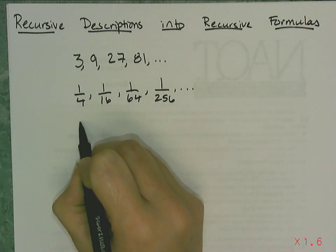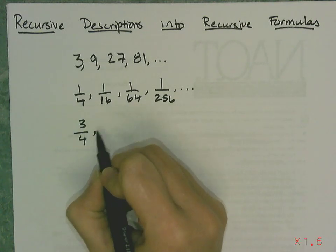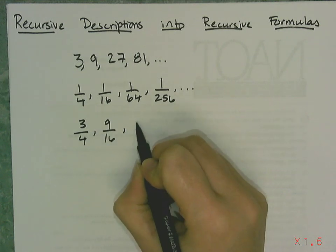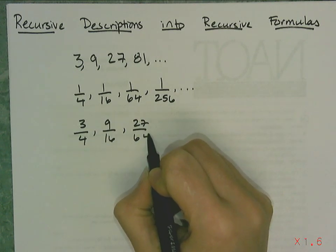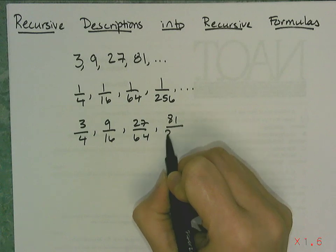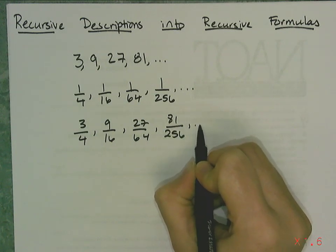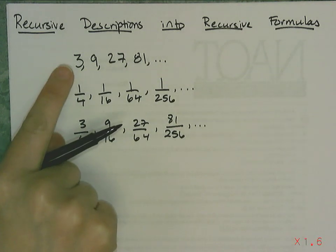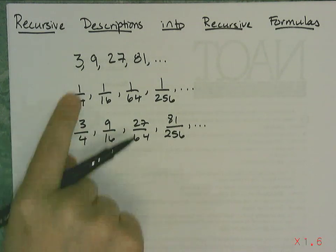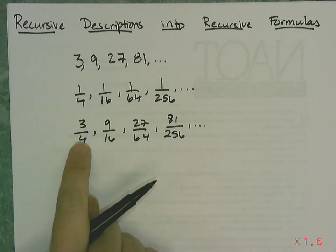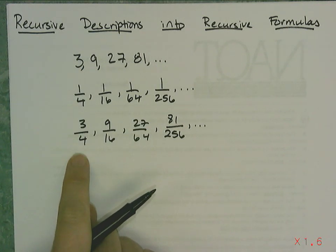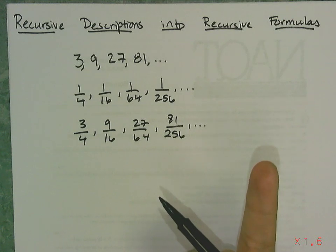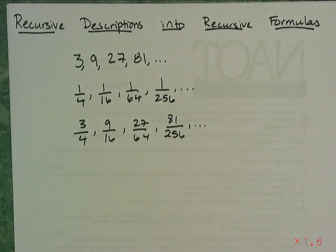And then finally we had the sequence 3/4, 9/16, 27/64, and 81/256. That was for the total area of the new upward pointing triangles per stage. The 3, the 1/4, and the 3/4 were from the first stage or one application of the rule to create Sierpinski's triangle.